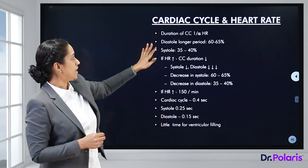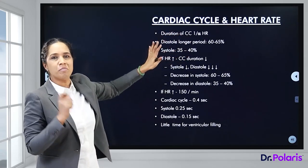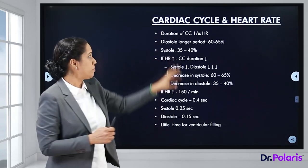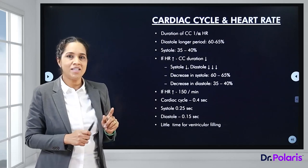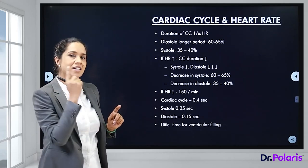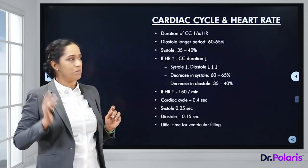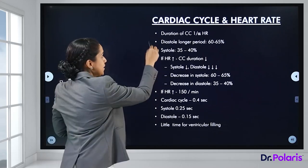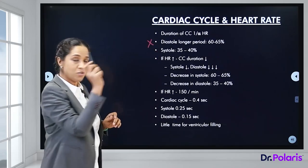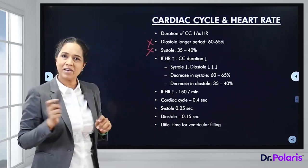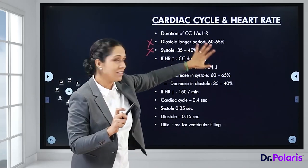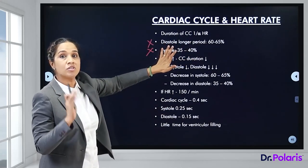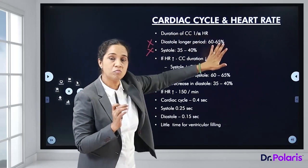The duration of the cardiac cycle is inversely proportional to heart rate: if heart rate increases, cardiac cycle duration comes down, and vice versa. Diastole takes 60–65% of the total time and systole takes 35–40%. This percentage breakdown reinforces the earlier timing figures for the phases.